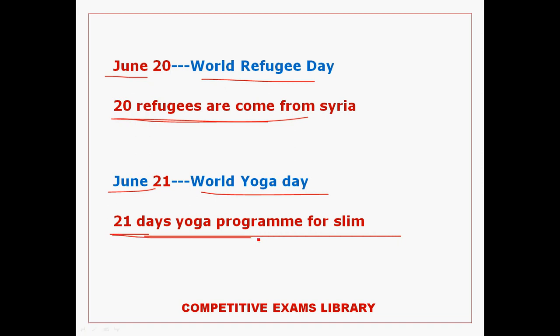So 21 days yoga program for slimming, a program and a start — okay. June 21st, what is Yoga Day? So you come and do yoga. June 21st is International Yoga Day. 21 days yoga program for slimming.